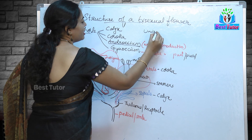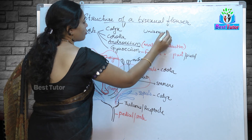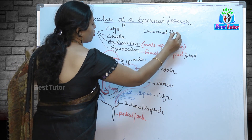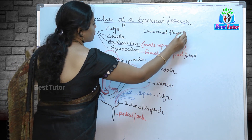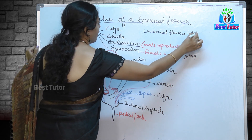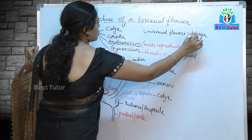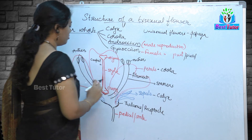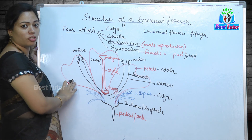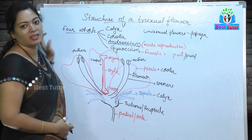Uni means one, meaning one reproductive part. So unisexual flowers — example, papaya. Now we have learnt about the structure of a bisexual flower. Thank you.